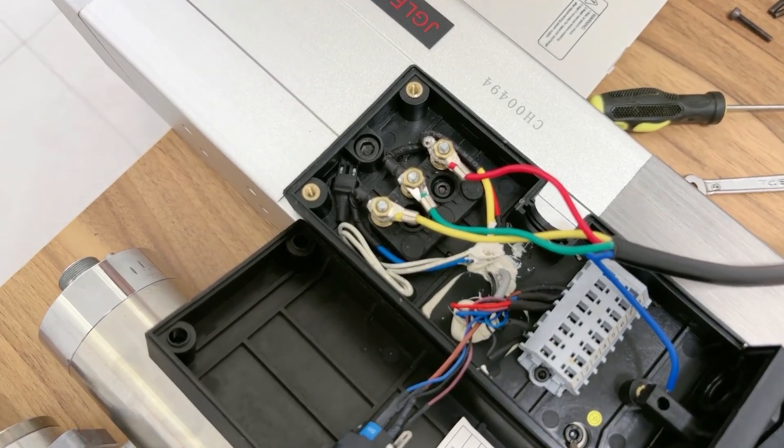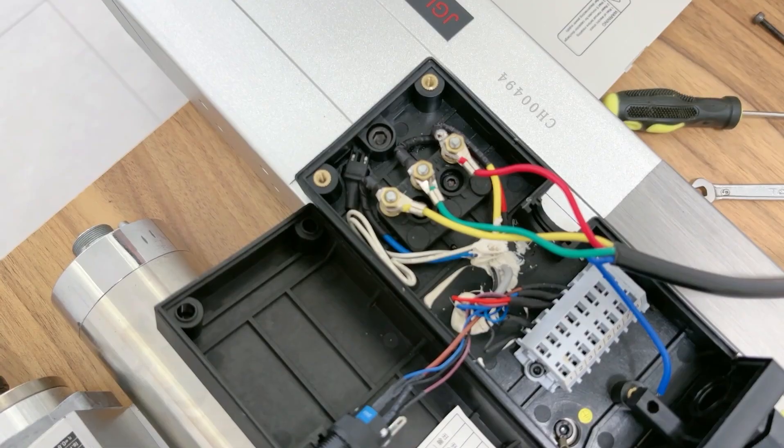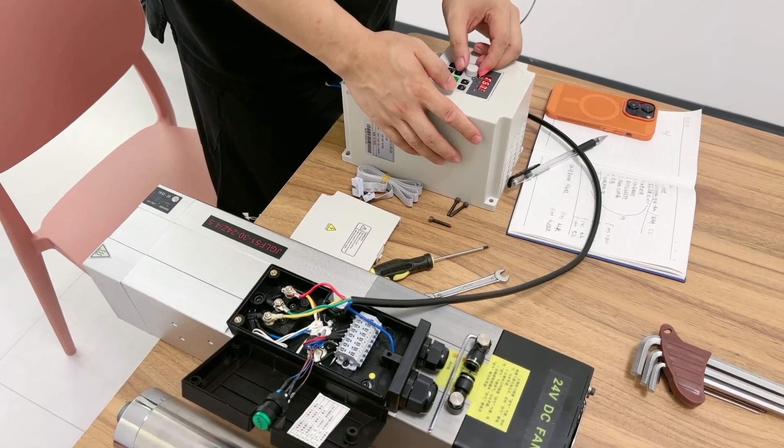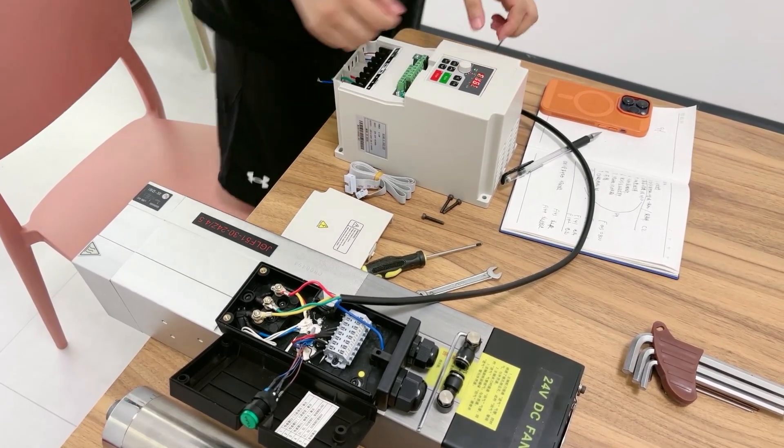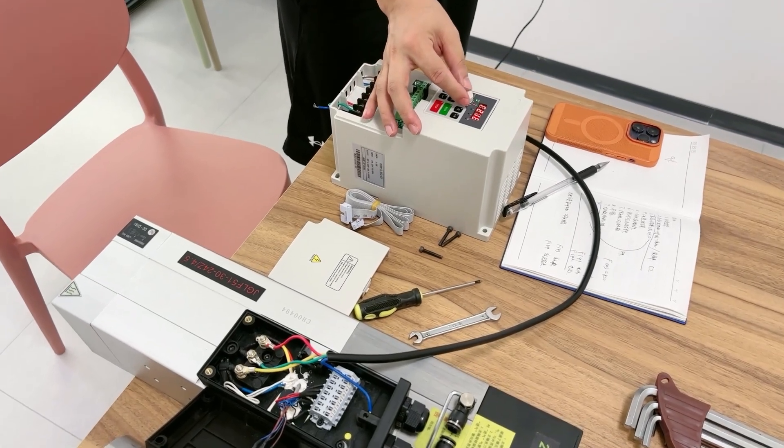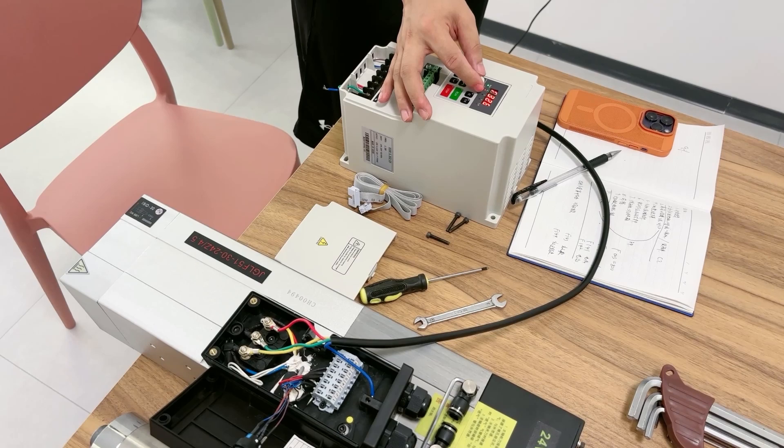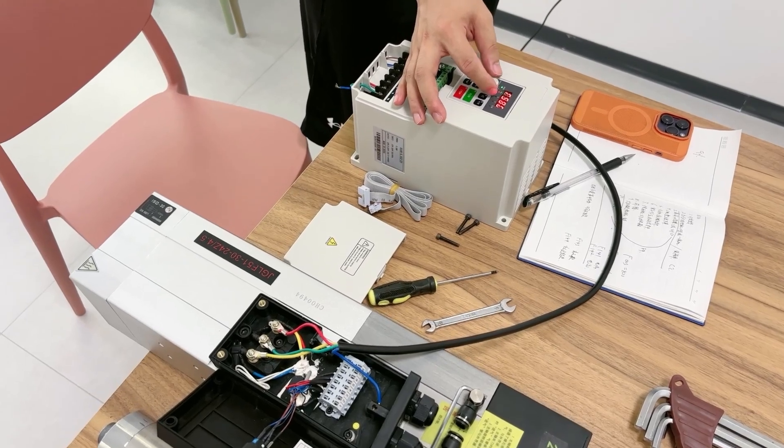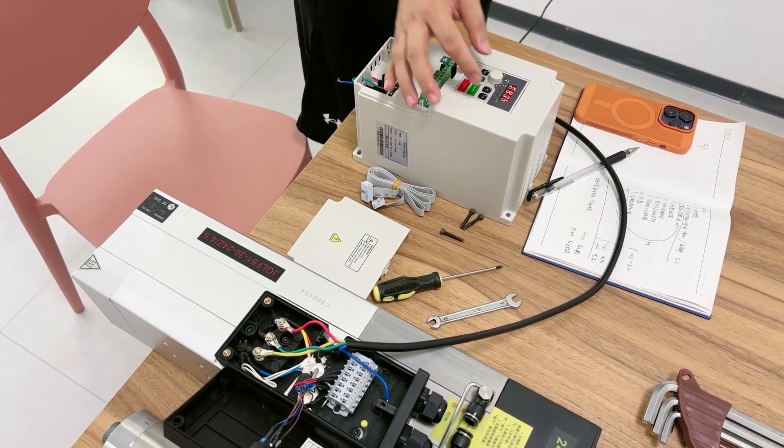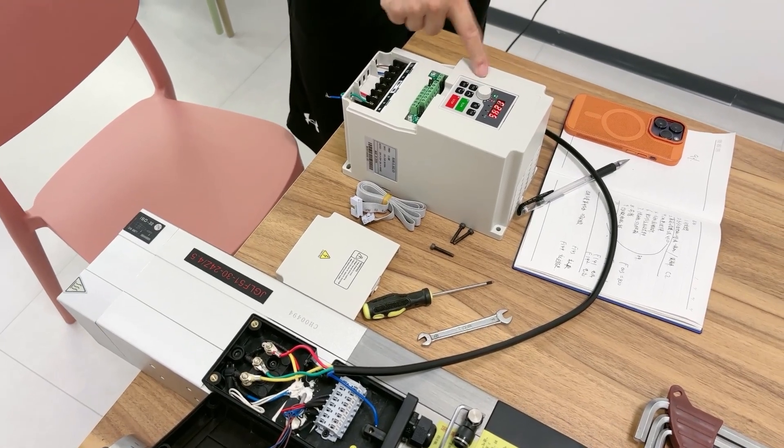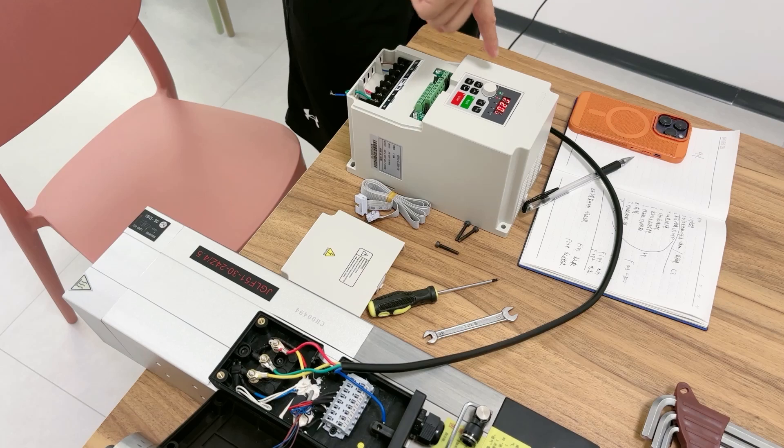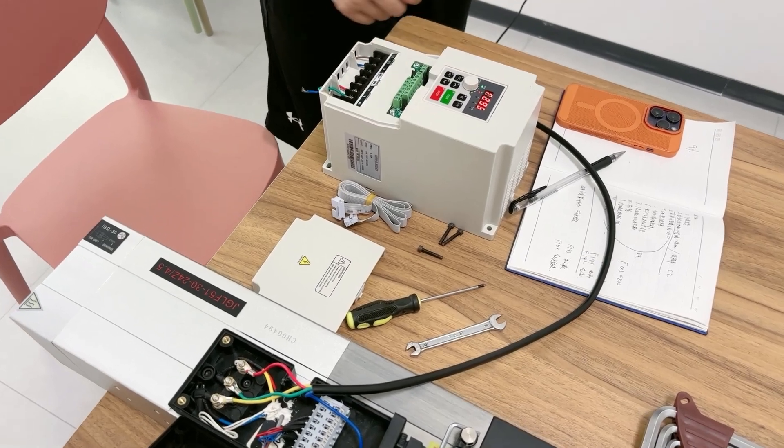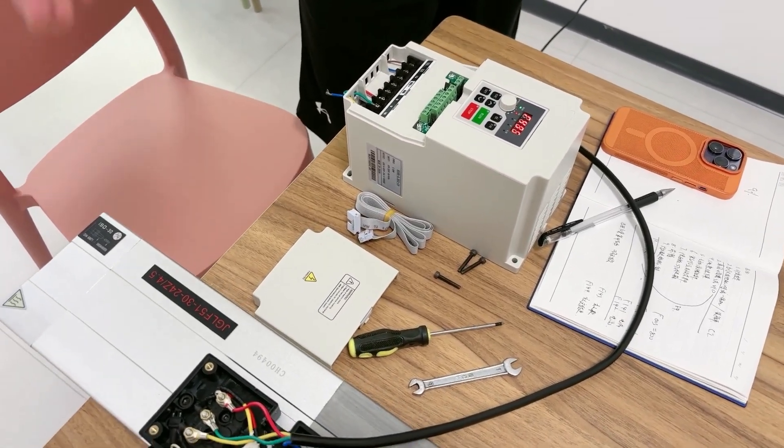Now from this button we can adjust the spindle speed when it's running. We just set the frequency parameter to 800, so when we adjust it to the end, it will show - look at that - the speed will rise one by one. Now it's 800 Hz and the speed is 24,000 RPM, very fast.